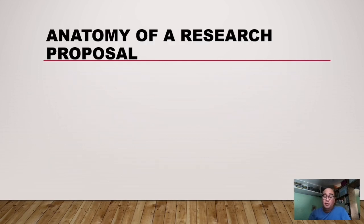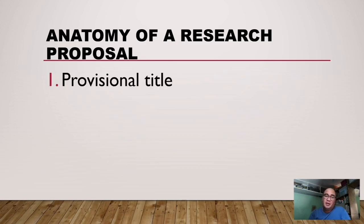Now, what is the anatomy of a research proposal? If you will be creating or submitting a proposal to your advisor or research professor, this is the anatomy. Number one, you should have your provisional title. I say it is provisional since during the process there might be slight changes — your panel members will give you suggestions for improving your title after your title defense.